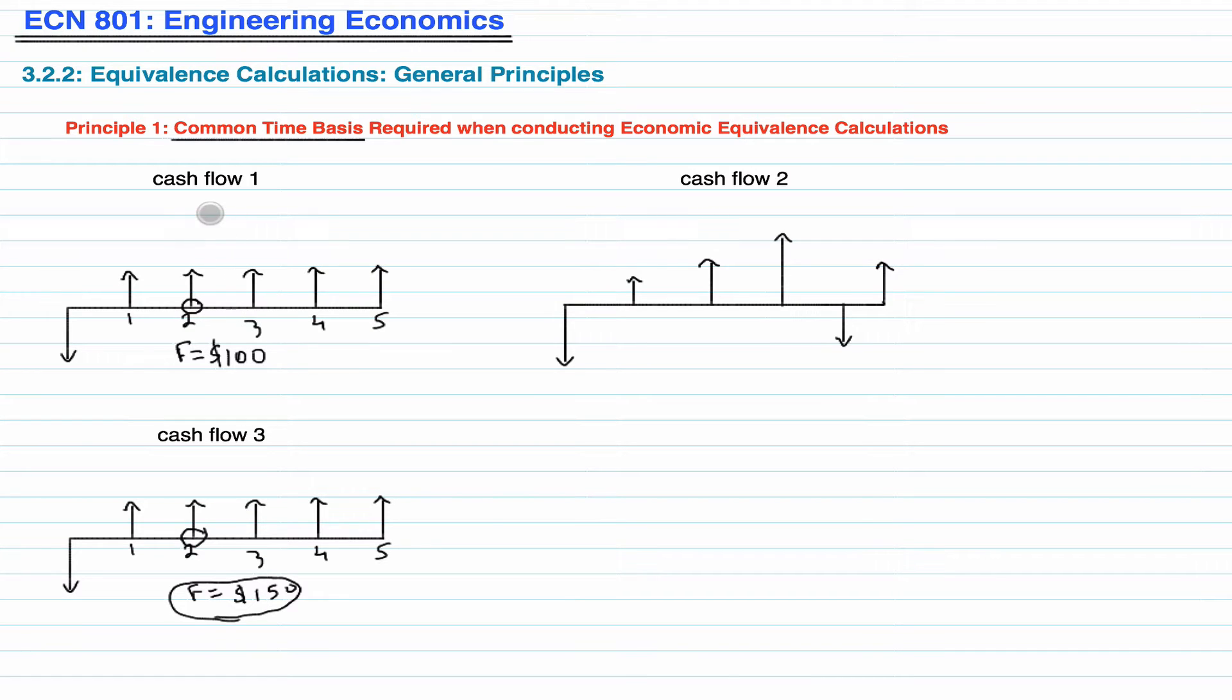Likewise, not all your cash flows will be the same. Your cash flow over here might be maybe $200, in which case you would choose this cash flow. And this particular cash flow may be chosen at period 2, but if your period is 4, for example, then you have to do the analysis again. What is the value at the 4th period?